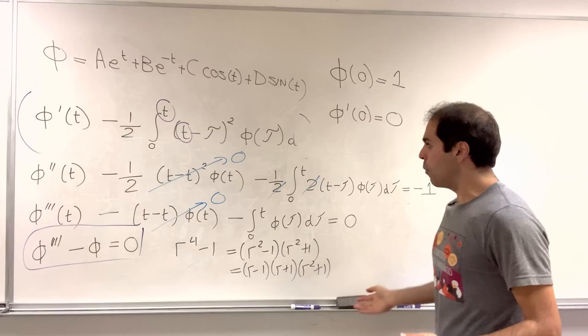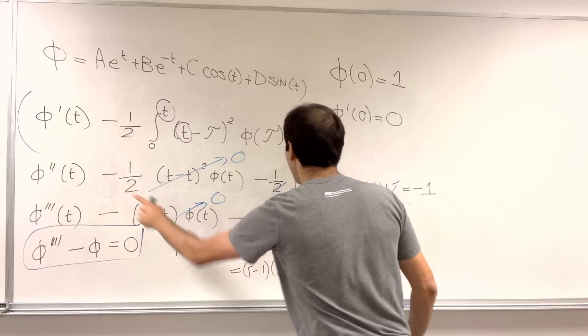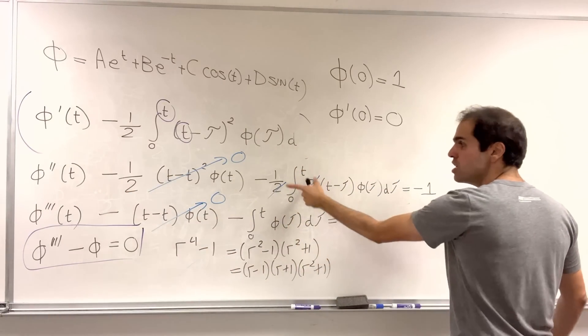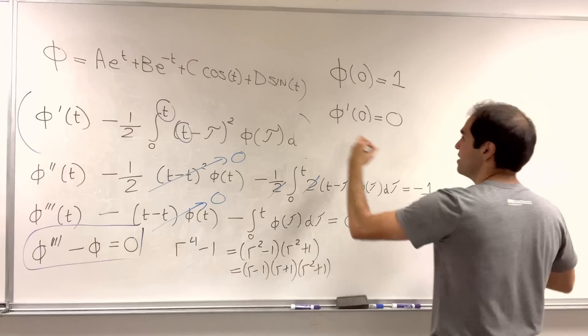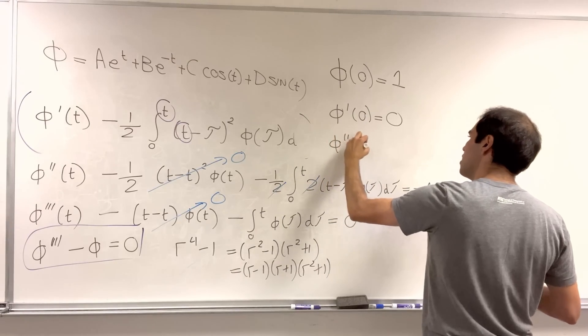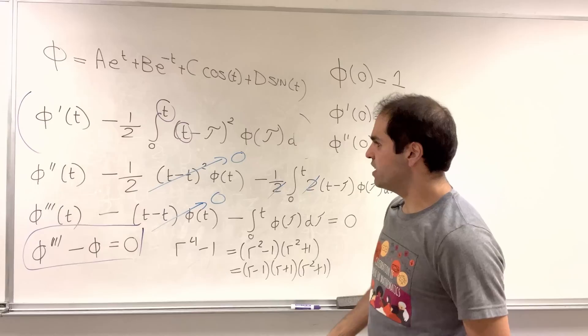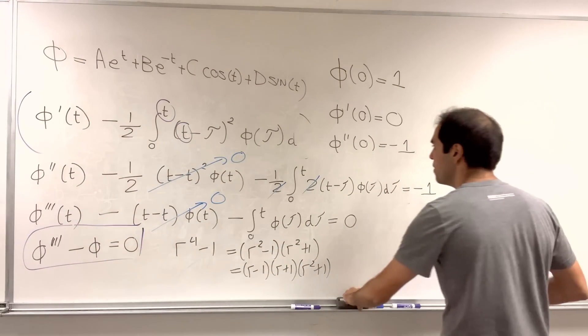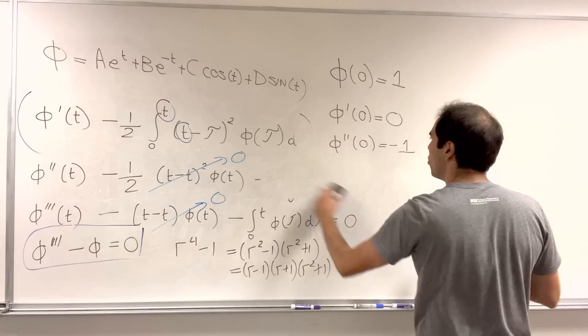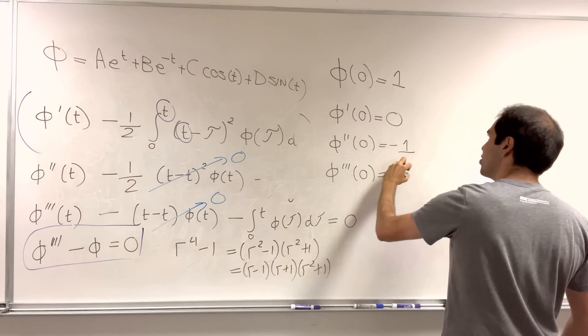What about phi double prime? Well, now we can plug into here. Phi double prime of zero minus integral zero to zero, which is zero, is minus one. And, finally, what about phi triple prime? Phi triple prime of zero minus zero equals zero. And, so, phi triple prime of zero equals zero.